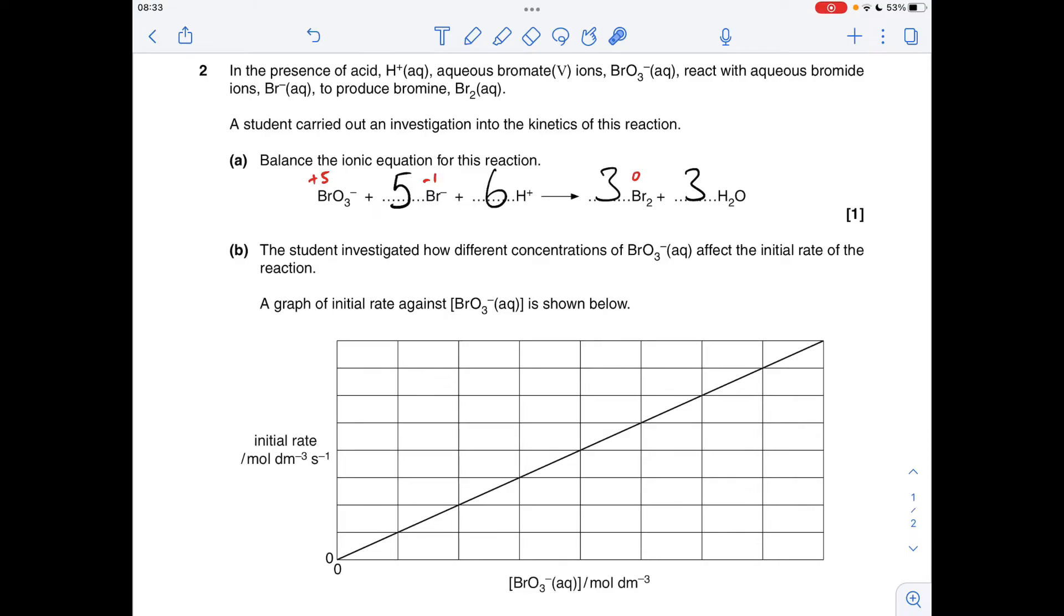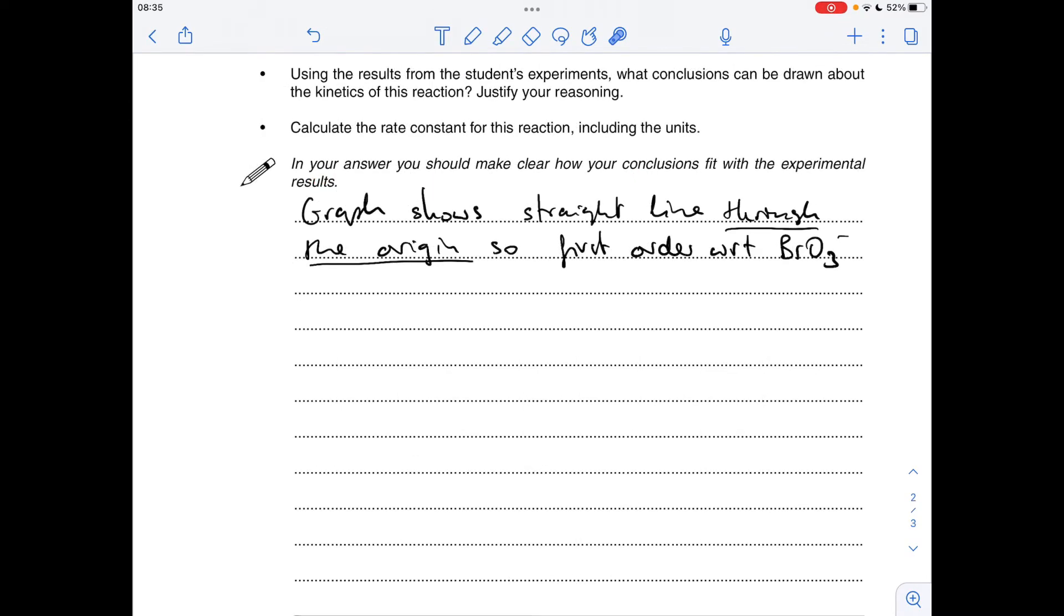So while the graph is still on the screen, this is going to tell us the order of reaction with respect to the BrO3 minus ion. You can see this is a rate-concentration graph. It's a straight line graph through the origin, so it's first order with respect to BrO3 minus. So I'm just saying something like this: the graph shows a straight line through the origin—really important that you say that—so it's first order with respect to BrO3 minus.